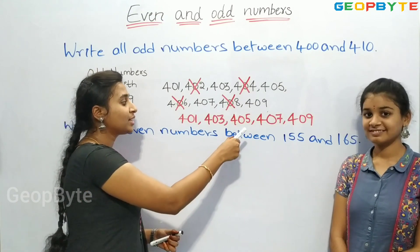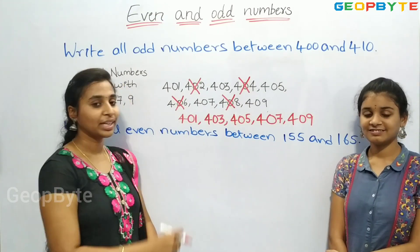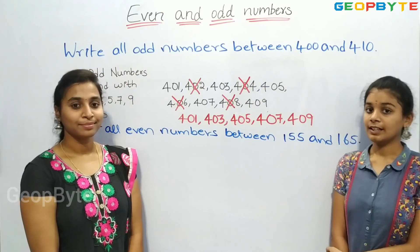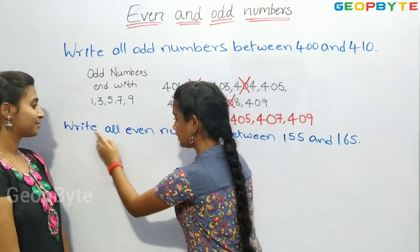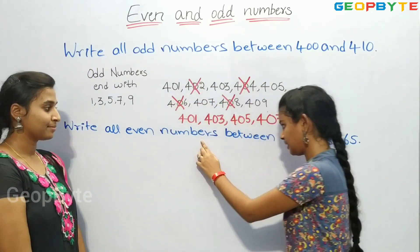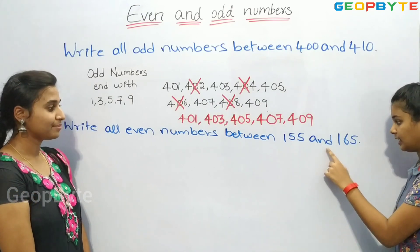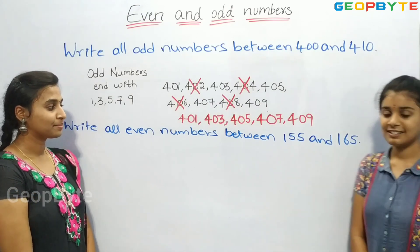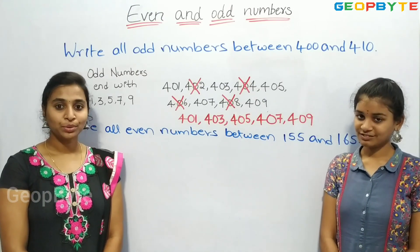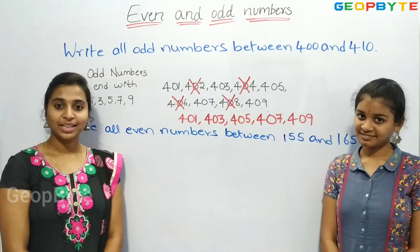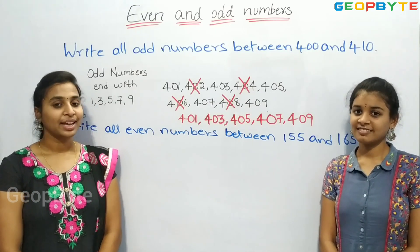Children, these are the odd numbers between 400 and 410. Now let us see this question: write all even numbers between 155 and 165. Children, the numbers which end with 2, 4, 6, 8, 0 are even numbers. Let us write.